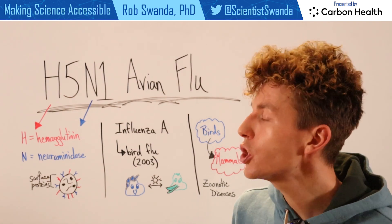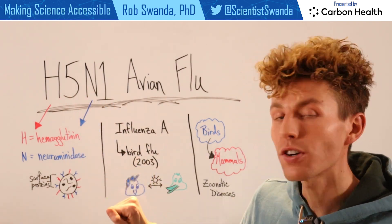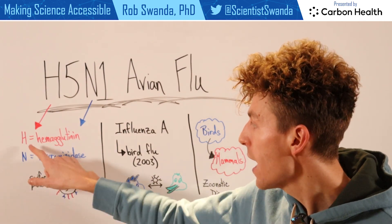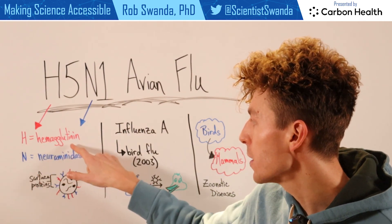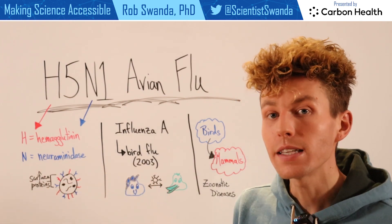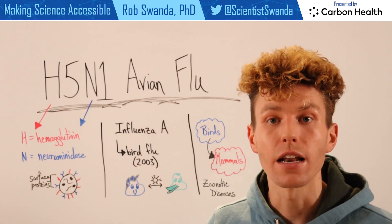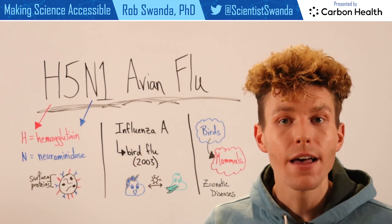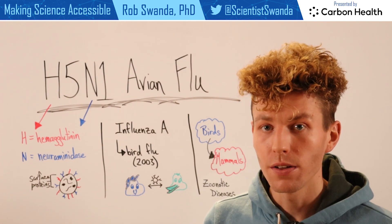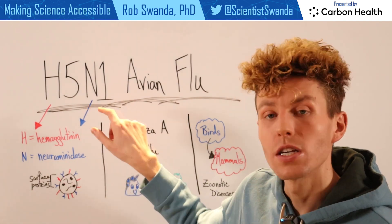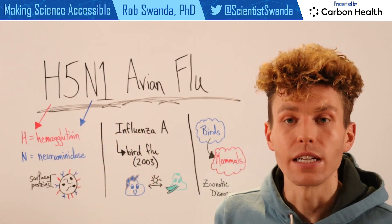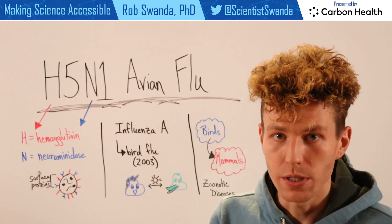If we look at the two letters of a strain, these are actually corresponding to two different proteins: H, hemagglutinin, and N, neuraminidase. These are proteins that are found on the outside of influenza that are necessary for it to infect a healthy cell. The numbers associated with that strain are different variants of those proteins.